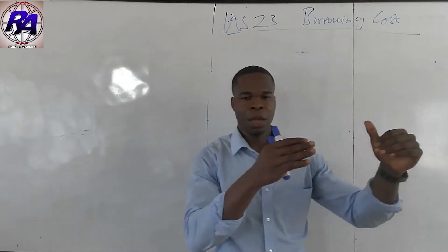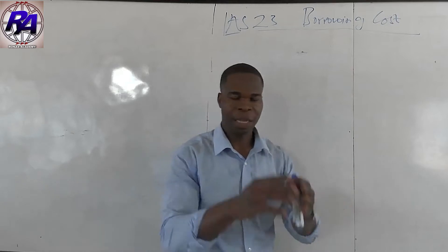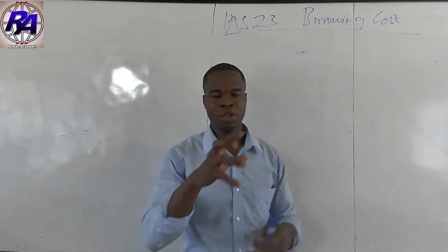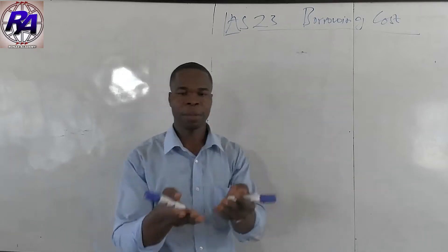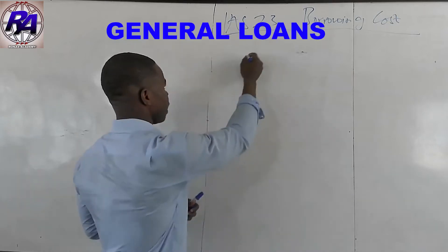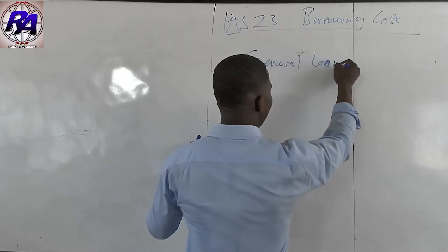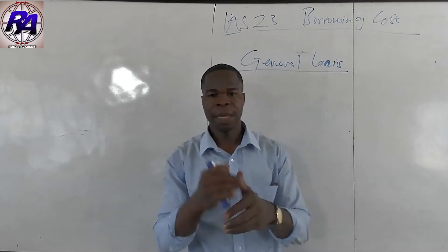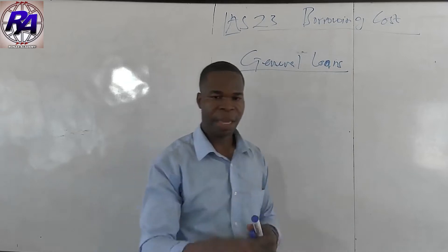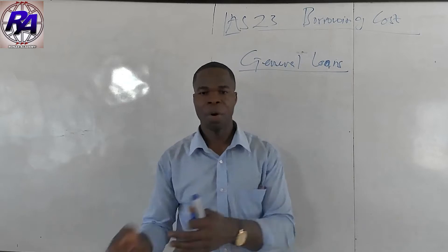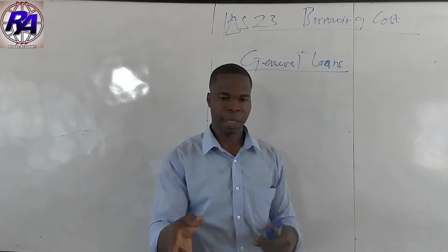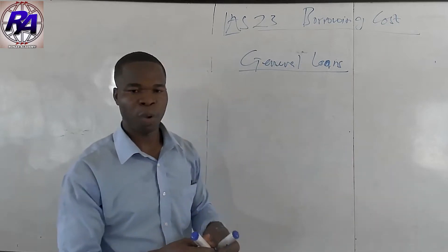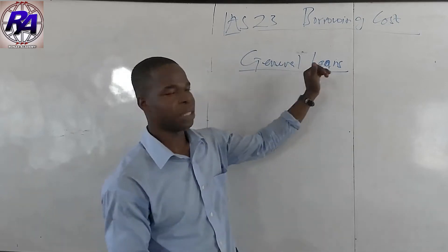If the entity undertakes several loans to finance a particular project — for example, taking a bank loan from one side and a venture loan from the other — then we cannot use the specific loan assumption. This concept is known as general loans. With general loans, the interest rate used in computing borrowing costs will be the weighted average borrowing cost rate, also called the capitalization rate.